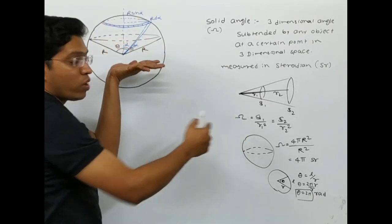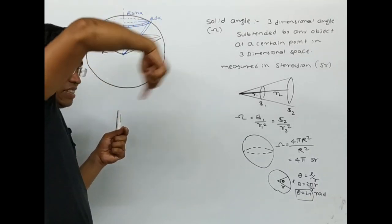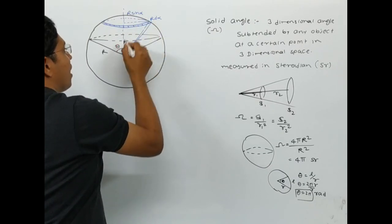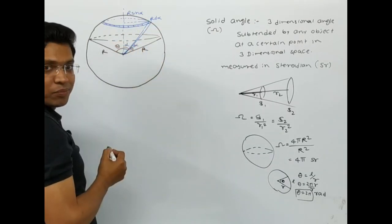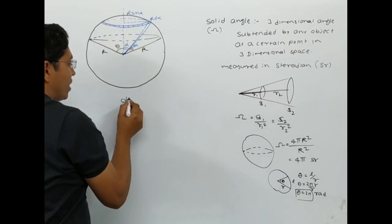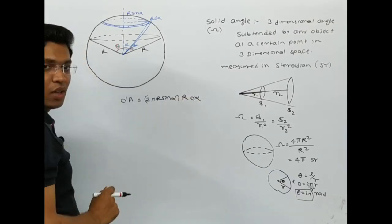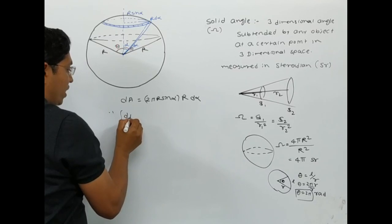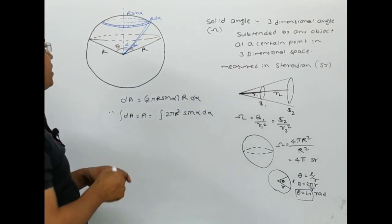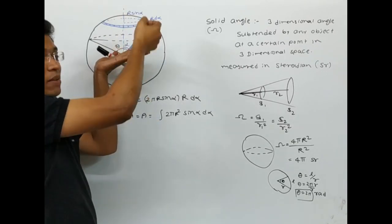How will I get that area? I can consider that this dome-like structure is made up of rings of different radii with small thicknesses. Considering a small elemental ring making an angle alpha with thickness d-alpha, the radius of the ring will be r·sin(α) and the small thickness is r·dα. The small elemental area is therefore 2π·r·sin(α)·r·dα. To find the total area, I will integrate this, giving 2πr² times the integral of sin(α)·dα.